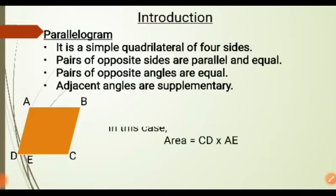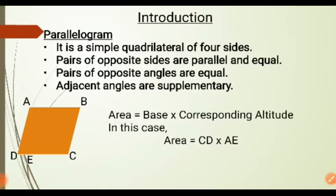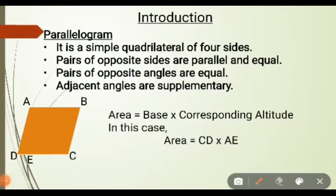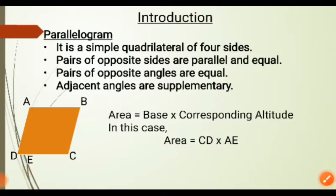Next we have the area of a parallelogram. It is given as base into its corresponding altitude. Whichever side we take as the base, we draw the altitude from that side. In this case we have taken CD as the base, which means AE will be the altitude. So the area of the parallelogram will be CD into AE.